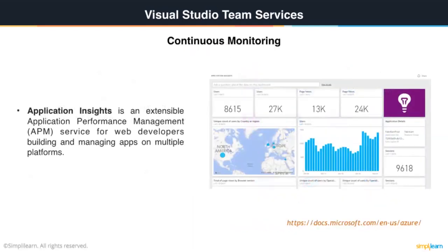When it comes to monitoring, we have Application Insights. Application Insights is an extensible application performance management service for web developers who are building and managing apps on multiple platforms. With Application Insights, you can quickly find out how your app is performing and being used when it is live. If there's a problem, it lets you know about it, helps you assess the impact, and helps you determine the cause. It brings your operation and application data together in one place, giving you all the capabilities of modern continuous monitoring.